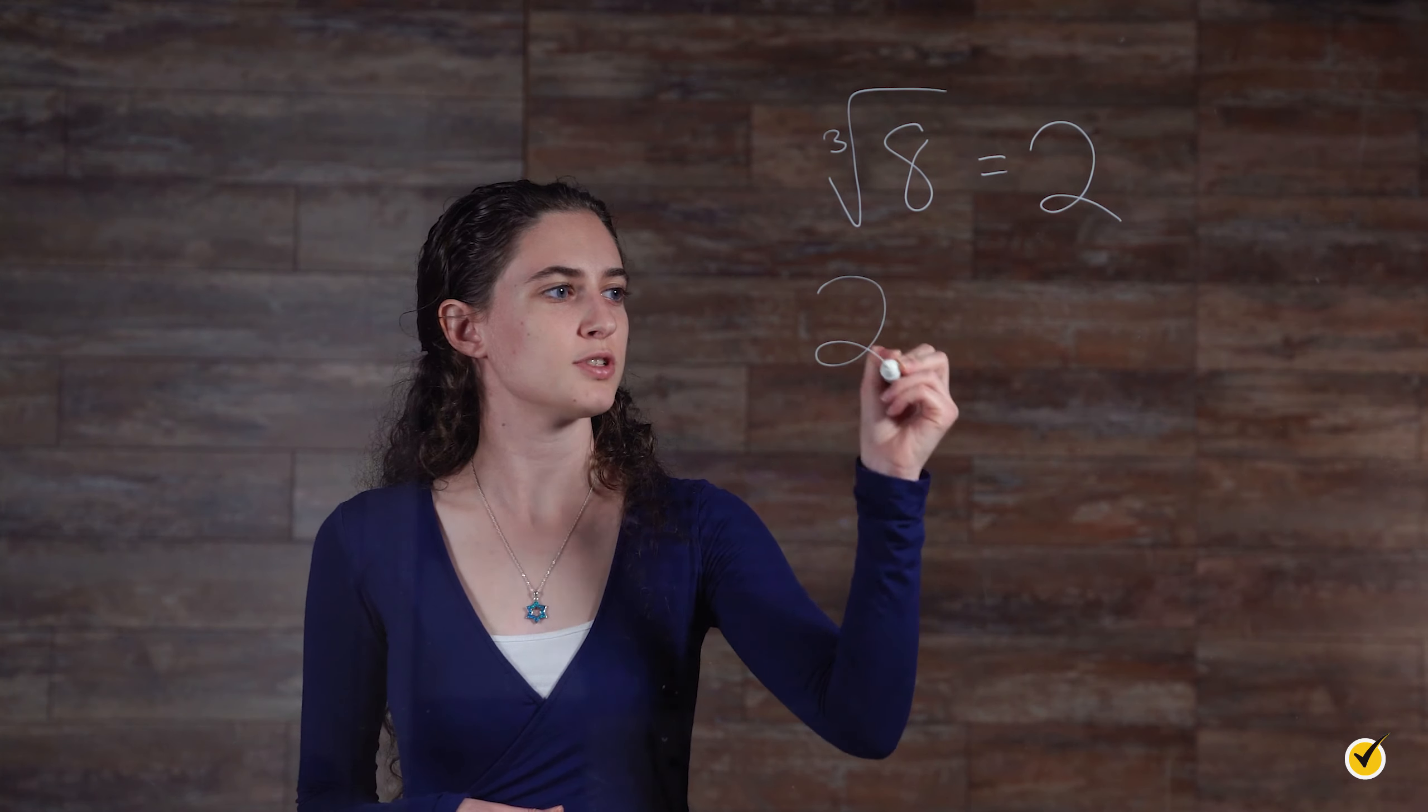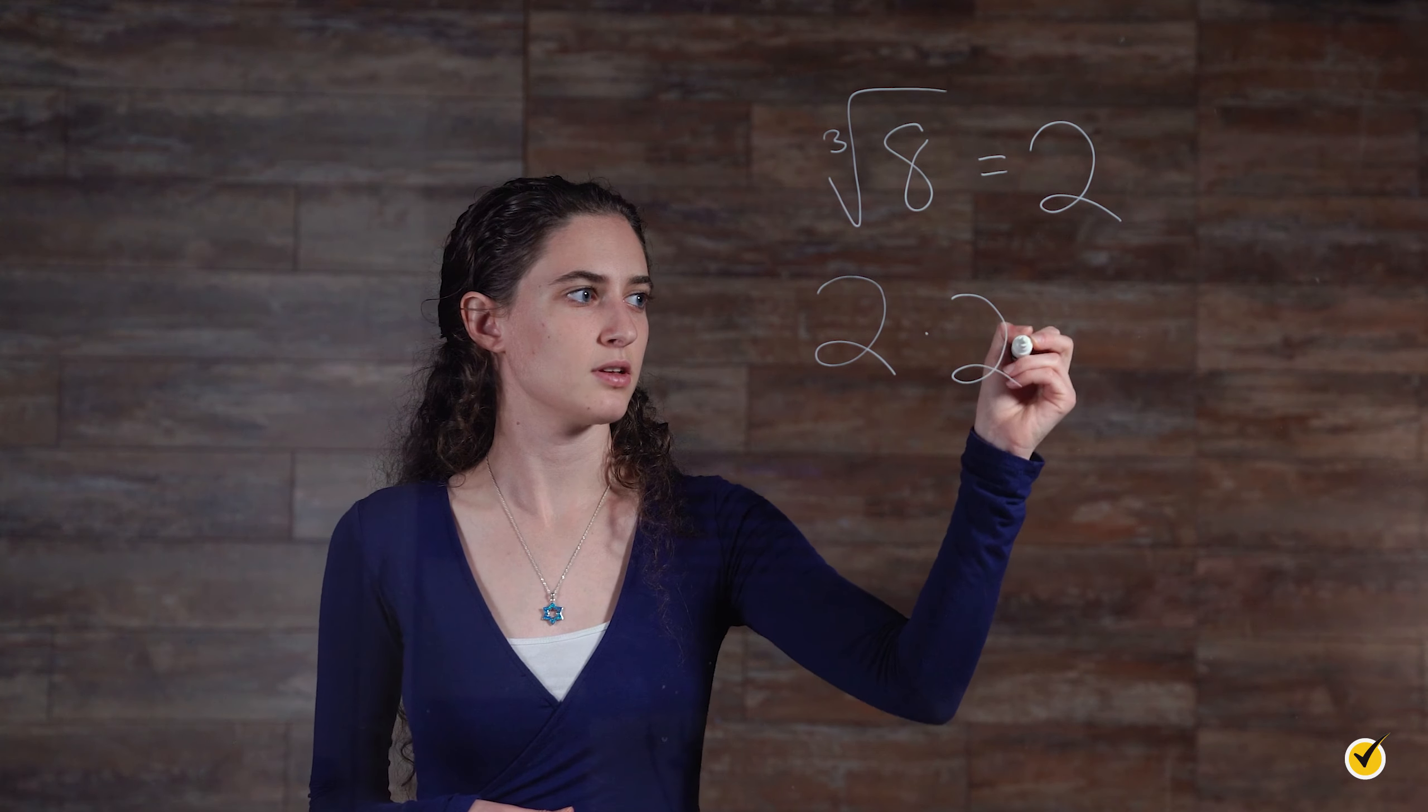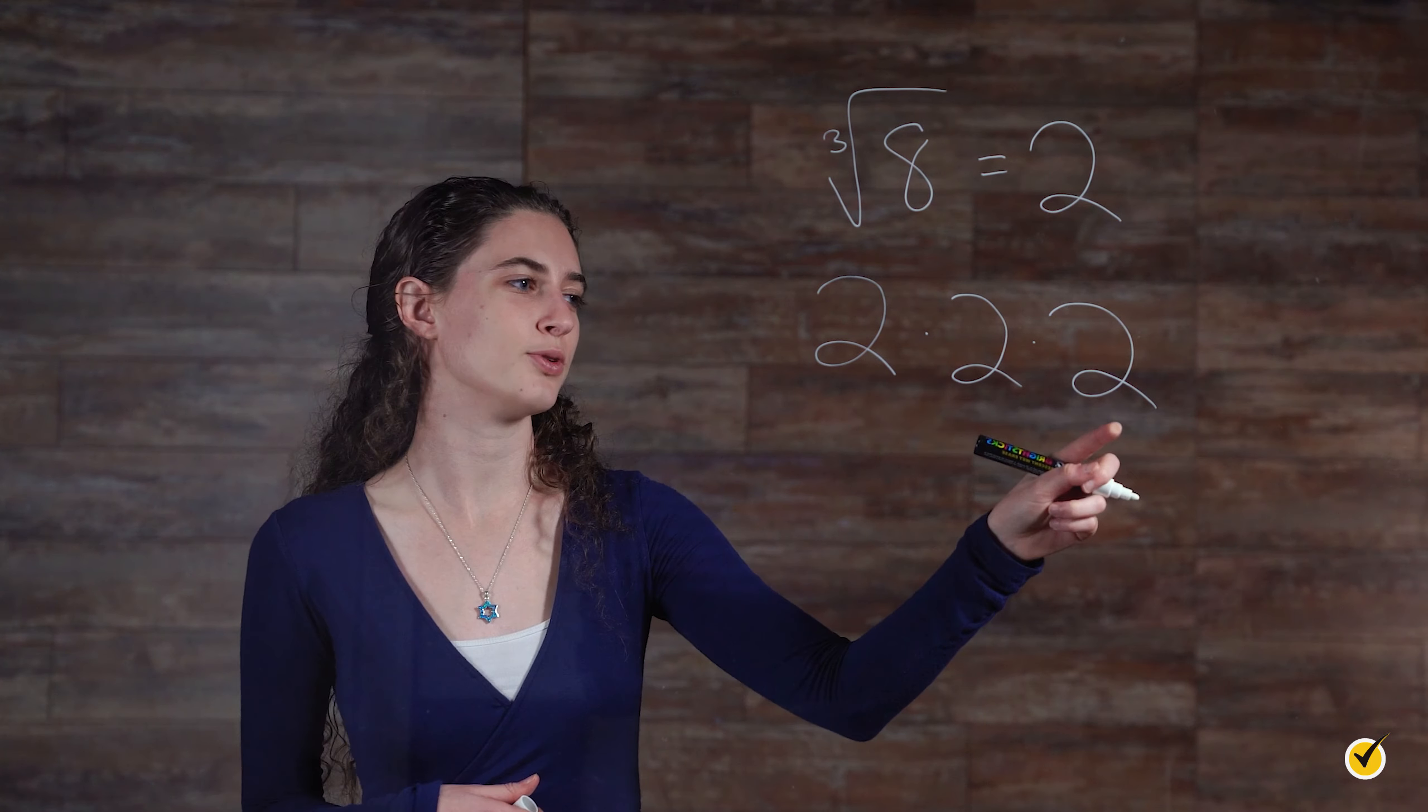To find the cube root of a number, ask yourself, what value, when multiplied by itself 3 times, results in that number? For example, the cube root of 8 would be 2, because 2 times itself 3 times, equals 8. 2 times 2 is 4, times 2 equals 8.